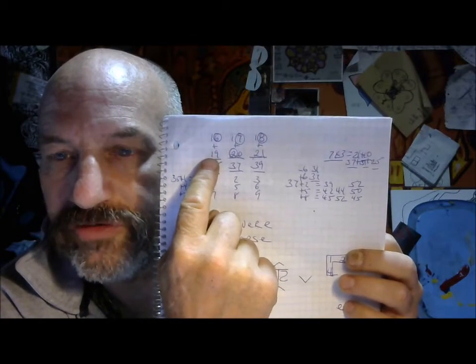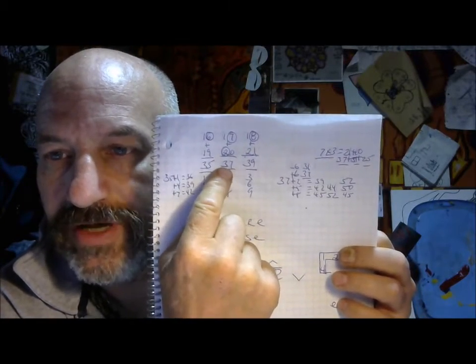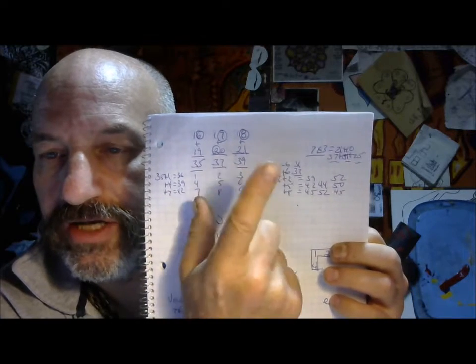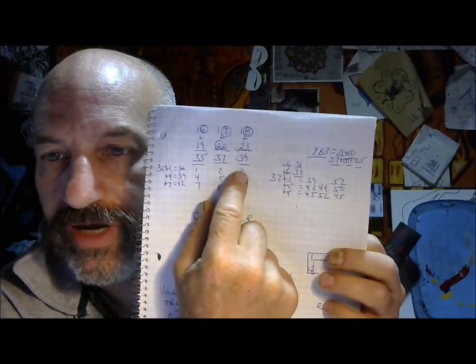Left side, 147 relationship. Middle, 258 relationship. Right side, 369. Takes you into the 6th inning, the 7th inning stretch.